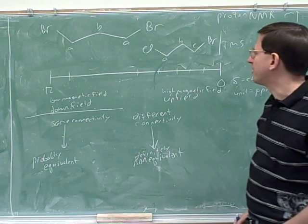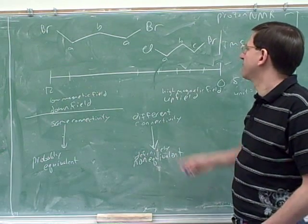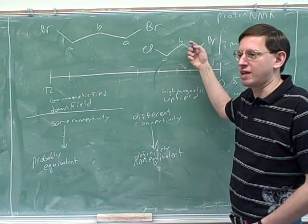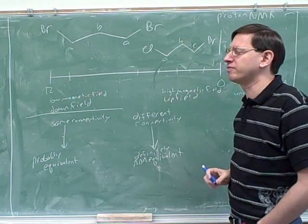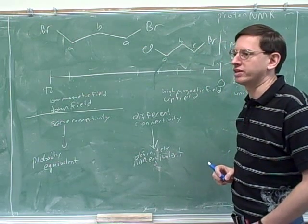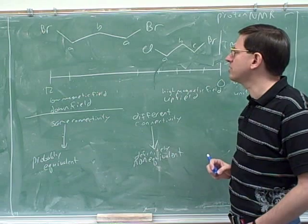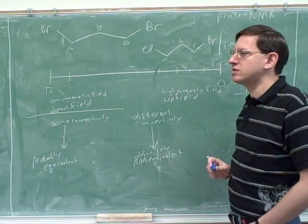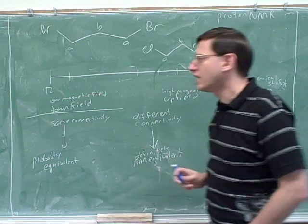All right, this is a very important skill. But I guess for time reasons, we won't go through any more examples. But this is one of the things you have to practice, being able to count. You have to be able to quickly see whether protons are equivalent or not. One thing we can see here is notice, symmetry reduces the number of peaks. Symmetry reduces the number of peaks.